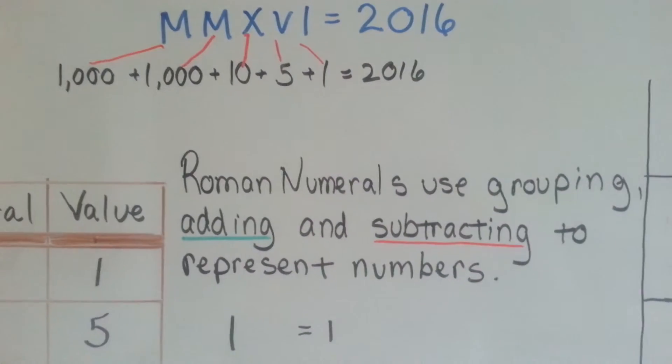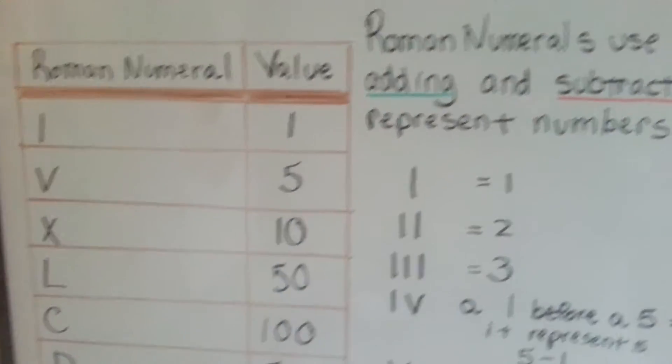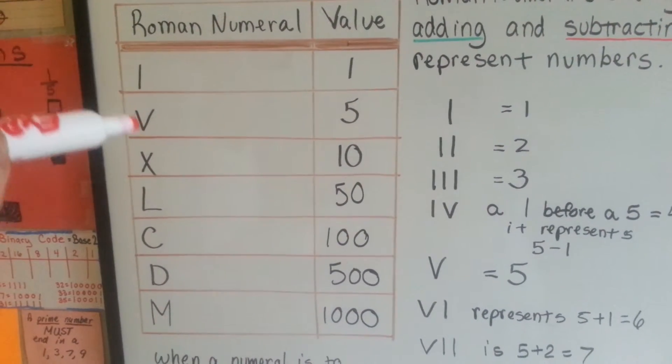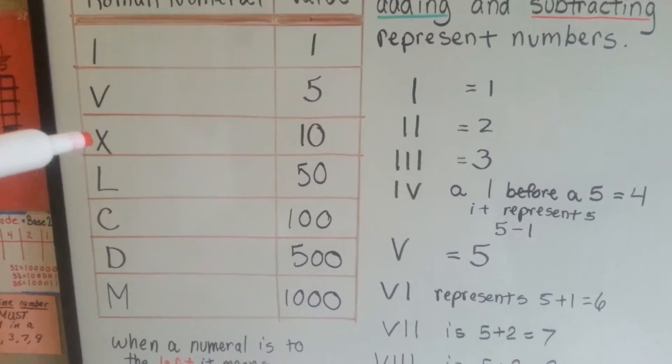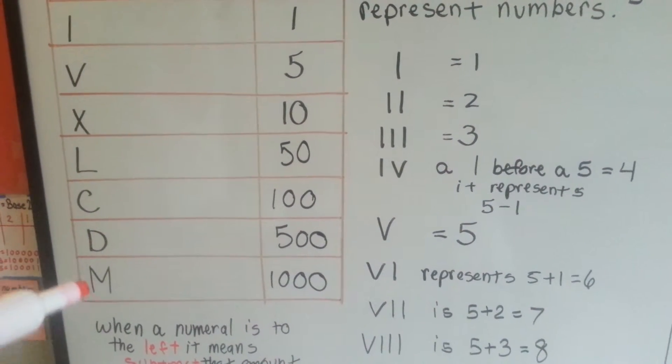Roman numerals use grouping of adding and subtracting to represent numbers. Here's a Roman numeral chart right here. I is 1, V is 5, X is 10, L is 50, C is 100, D is 500, and M is 1,000.